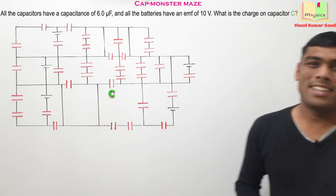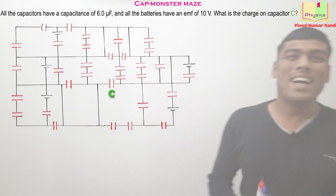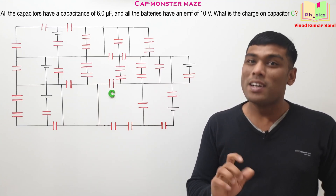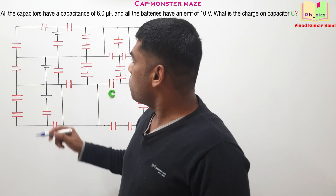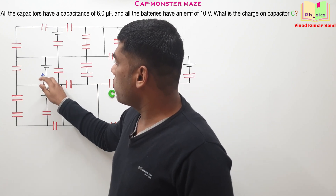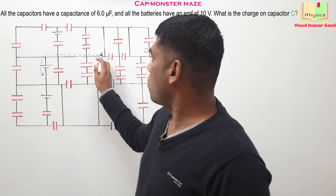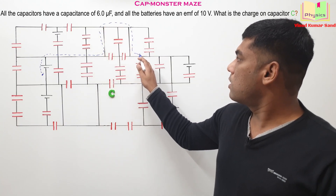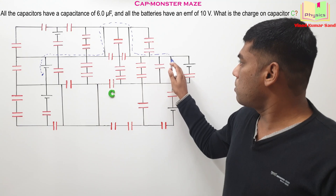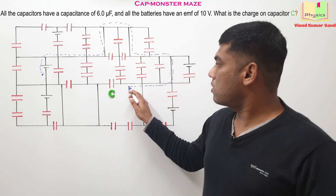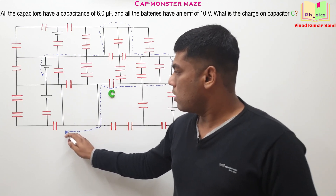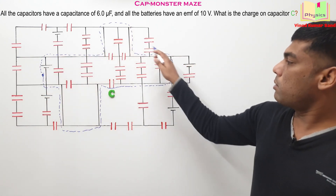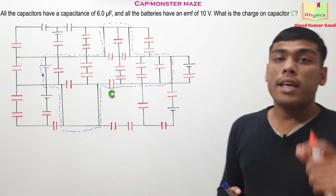The charge on this capacitor is 60 microcoulombs. The solution is pretty easy. Suppose we start from this point and we wish to apply Kirchhoff's Voltage Law, the KVL. We are choosing a path like this — a simple path — going around and reaching back to the same point. Think about this blue loop.